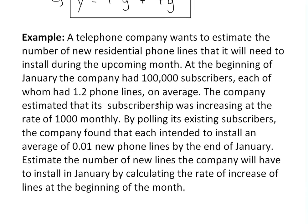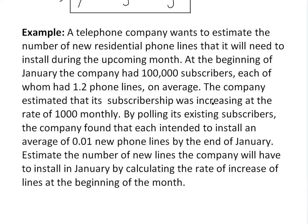The company estimated that its subscribership was increasing at the rate of 1000 monthly. By polling its existing subscribers, the company found that each intended to install an average of 0.01 new phone lines by the end of January.